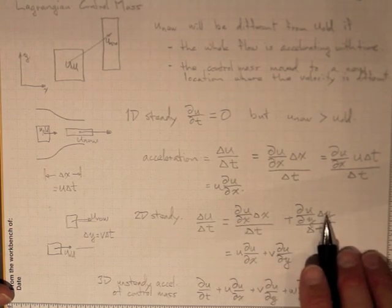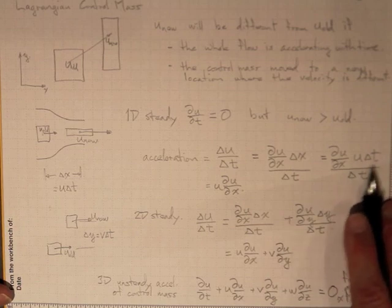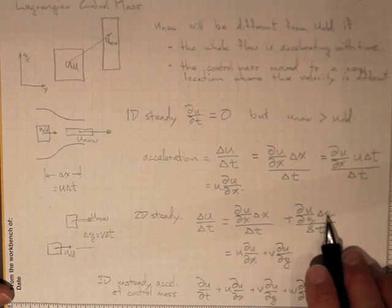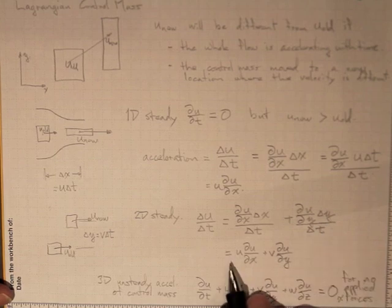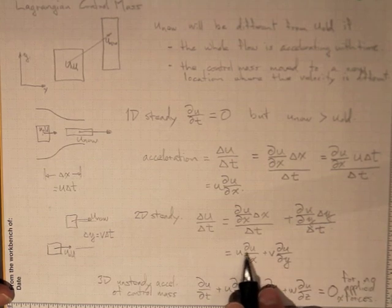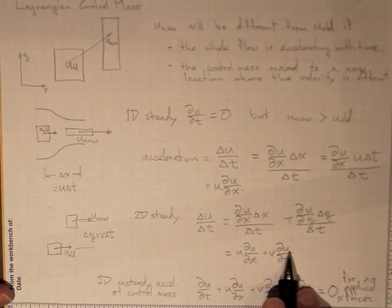And following the same approach as we did before with u Δt for Δx and v Δt for Δy, we wind up with u ∂u/∂x plus v ∂u/∂y.